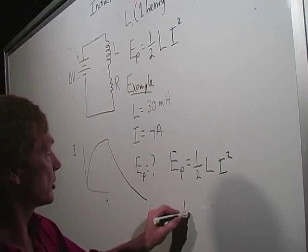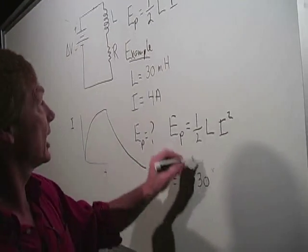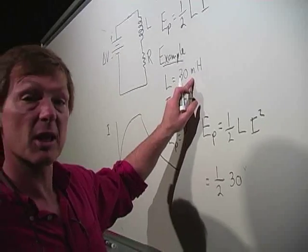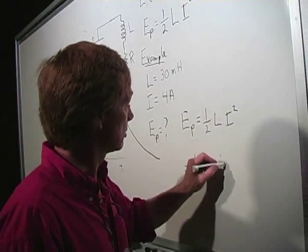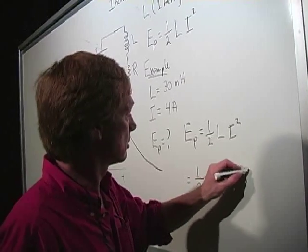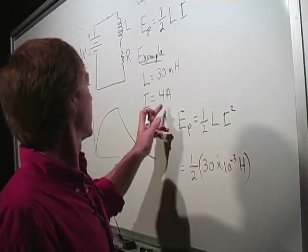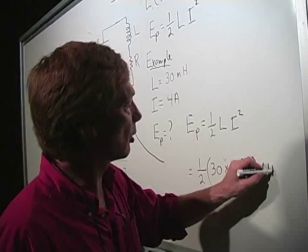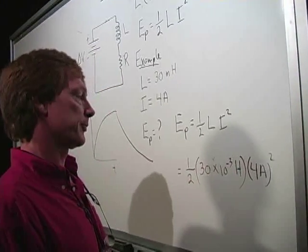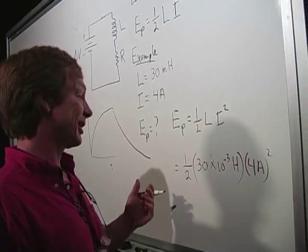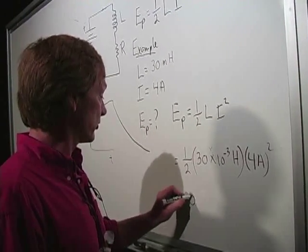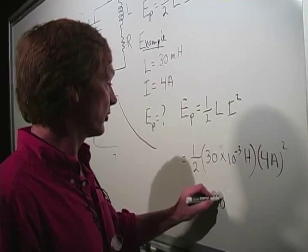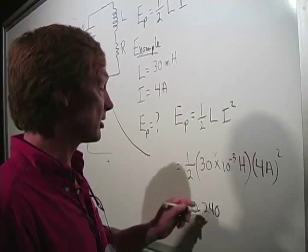So the potential energy stored is 1/2 the inductance times the current squared. There's my working equation, which is 1/2 30. And again, I've got milli. That means times 10 to the minus 3. So I'm going to say times 10 to the minus 3 times 4 amps. And don't forget, that's 4 amps squared.